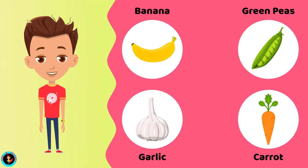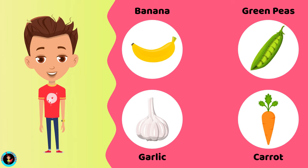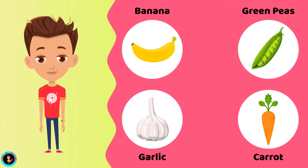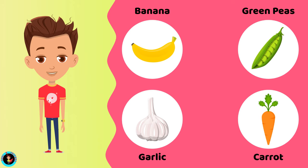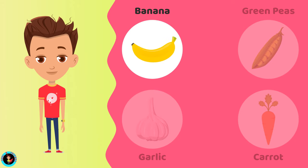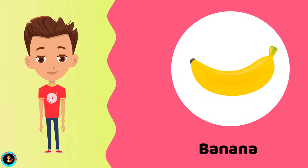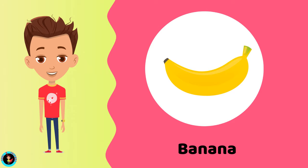Which among these is a fruit? Banana. Peas. Garlic. Carrot. The right answer is Banana. Banana is a fruit.